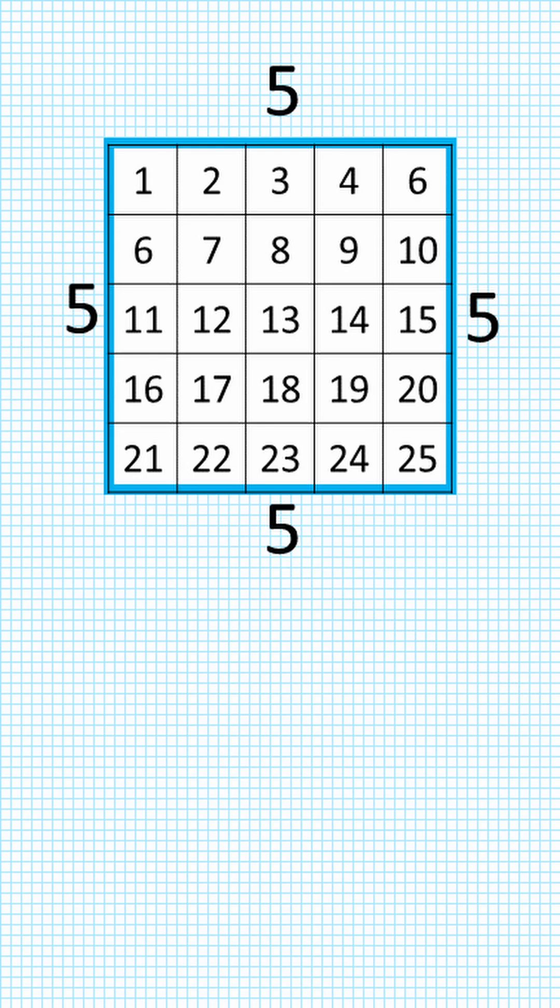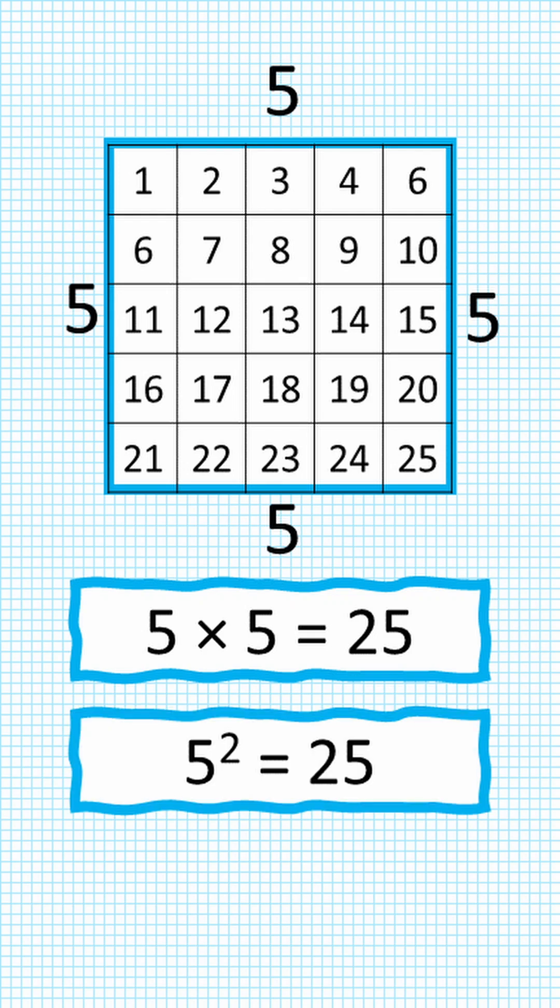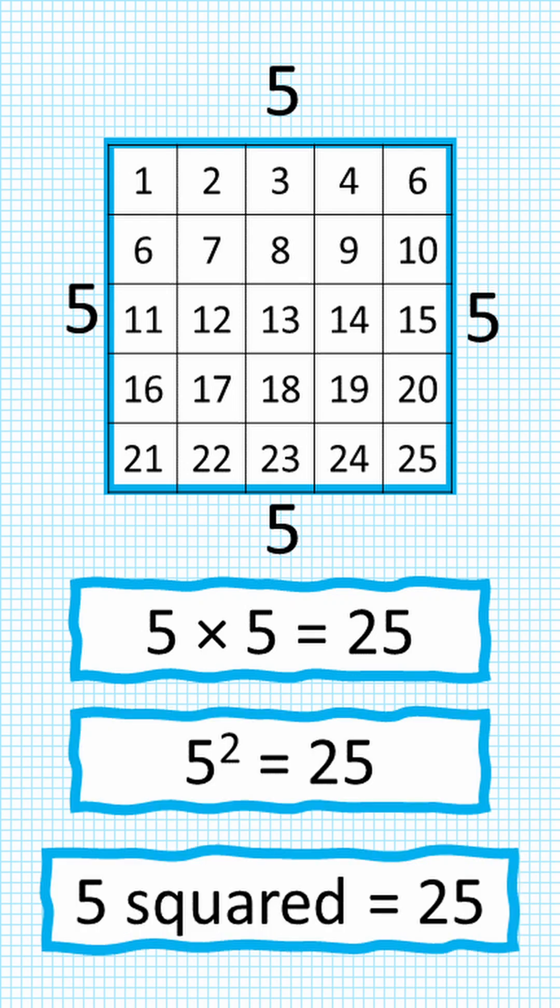Here is a five by five square and you can see it has an area of 25 squares. 5 times 5 equals 25. We can write that as 5 to the power of 2 equals 25, and sometimes we call that 5 squared equals 25.